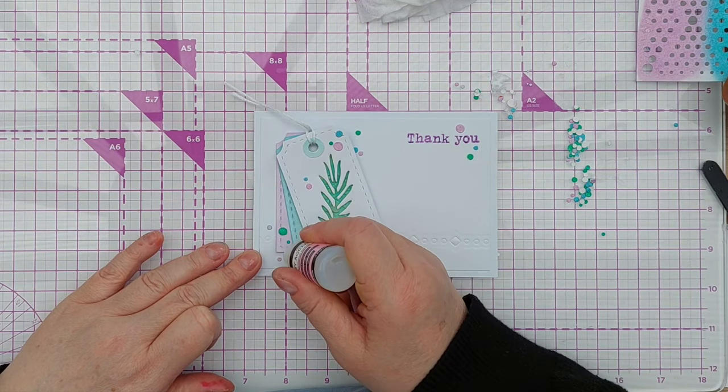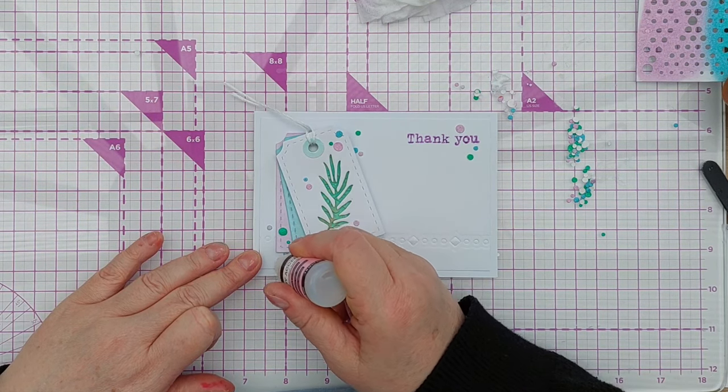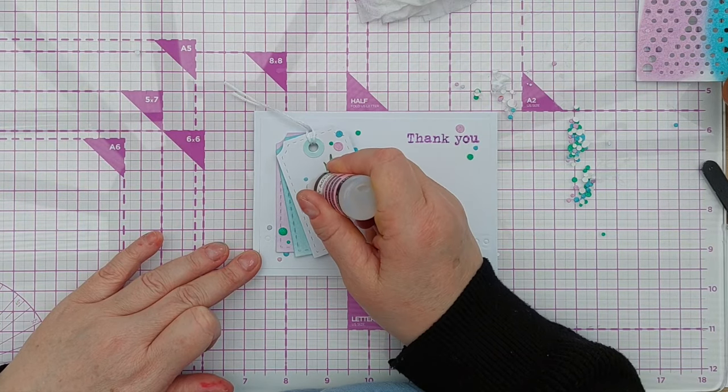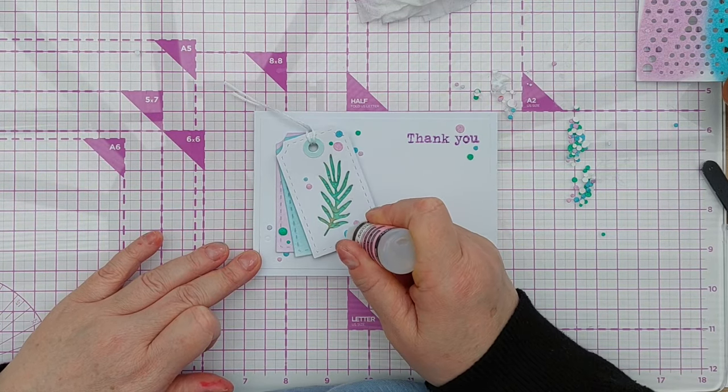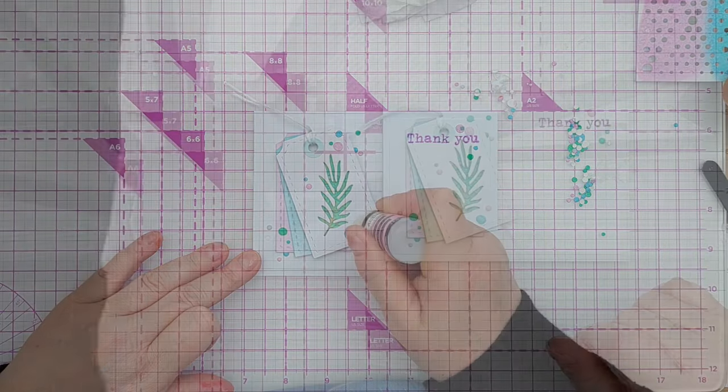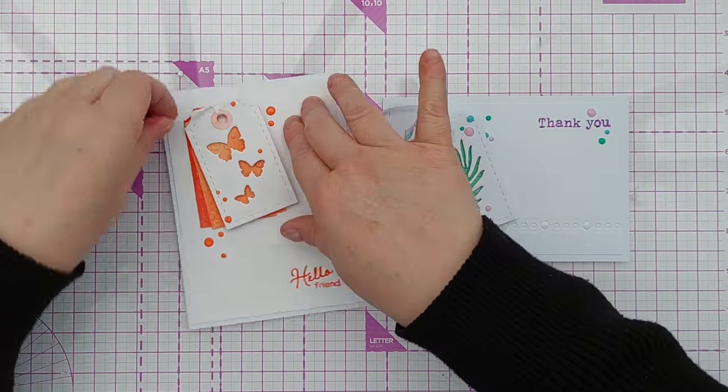To give the card a bit of shine, I'm going to add a drop of glossy accents onto every little dot, and then they'll end up looking a bit like wonky enamel dots. I think we're all done.